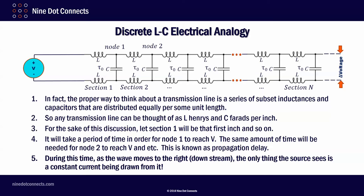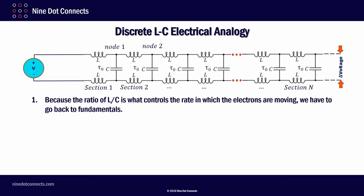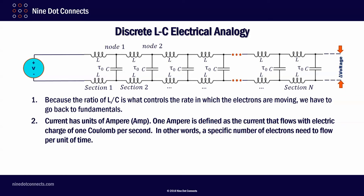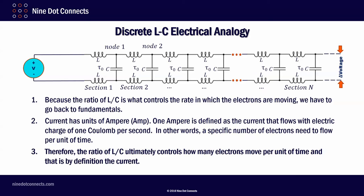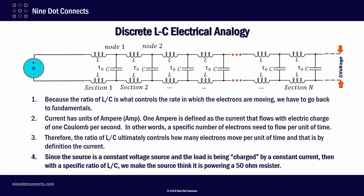During this time, as the wave moves to the right, and what I mean by that is the voltage moves to the right, the only thing the source sees is a constant current being drawn from it. Because the ratio of L to C is what controls the rate in which the electrons are moving, we have to go back to fundamentals. Current as unit of amperes. One ampere is defined as a current that flows with an electric charge of one coulomb per second. In other words, a specific number of electrons need to flow per unit of time. Therefore, the ratio of L to C ultimately is going to control how many electrons move per unit of time, and that is by definition the current. Since the source is a constant voltage source, and the load is being charged, and the load being the line, by a constant current, then with a specific ratio of L to C, we can make the source think it is powering a 50 ohm resistor.